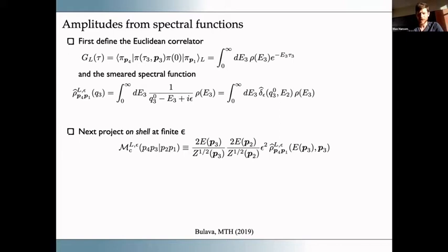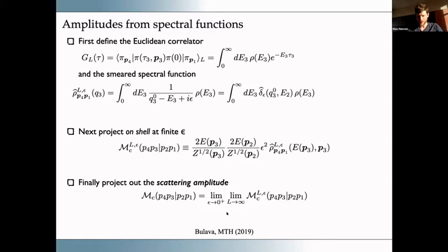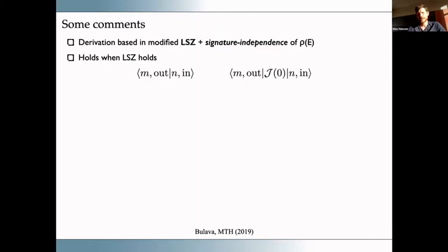You can break this into its real part — the smooth principal value piece — and its imaginary part — which is sharply peaked. Crucially, we don't think of epsilon as infinitesimally small; we allow epsilon to take on a range of values achievable with our reconstruction method. One can show that if you dig out this smeared spectral function and go on-shell by evaluating at the physical energy of the third pion, then amputate the external legs — which here means multiplying by epsilon squared, one epsilon per field — and remove overlap factors, you get a smeared finite volume estimator of the complex-valued two-to-two scattering amplitude.